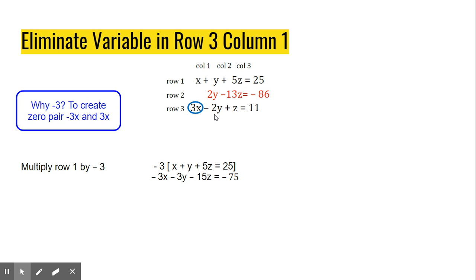And when you do this, I would be careful to write it out like this. Document every piece of work because it's easy to make an arithmetic mistake in here. And you'll never find it if you didn't write it down. So I multiplied every term on both sides of the equation by negative 3. And this is what I get. And I'm going to take that result and add it to Row 3.